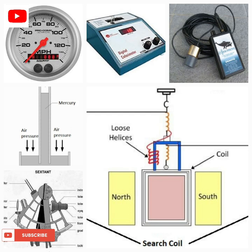Calipers is an instrument used to measure inner and outer diameters of bodies. The calorimeter is used to measure quantities of heat. The cardiogram traces movements of the heart, recorded on a cardiograph. The chronometer determines the longitude of a vessel at sea.